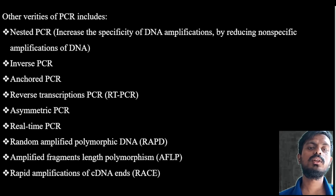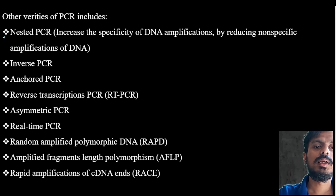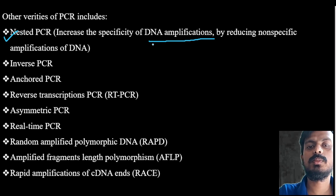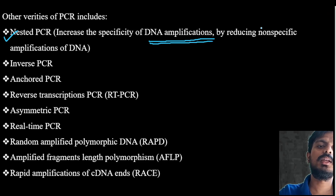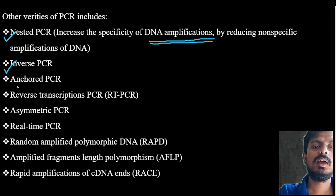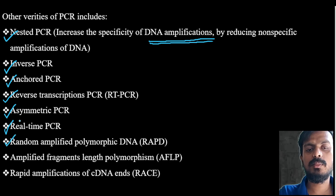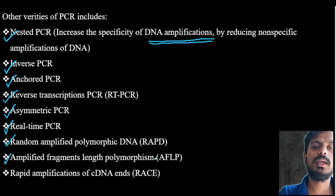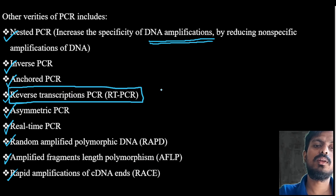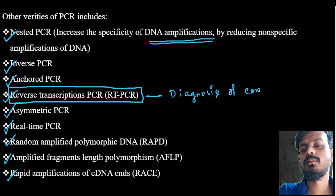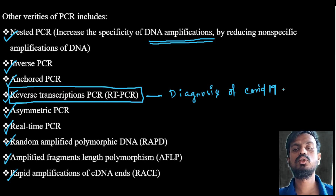There are other varieties of PCR. One is nested PCR, which increases the specificity of DNA amplification by reducing non-specific amplification. Others include inverse PCR, anchored PCR, reverse transcription PCR, asymmetric PCR, real-time PCR, random amplified polymorphic DNA PCR (RAPD), amplification fragment length polymorphism (AFLP), and rapid amplification of cDNA ends.